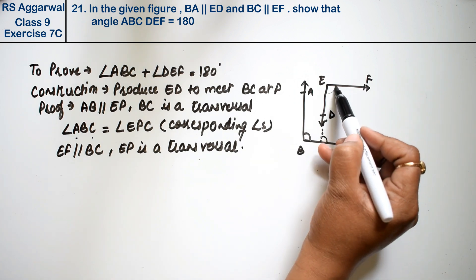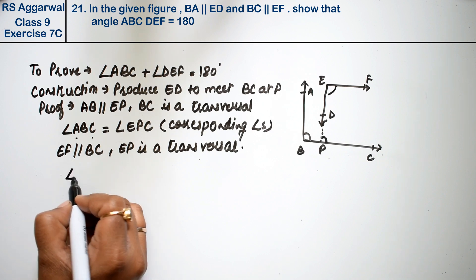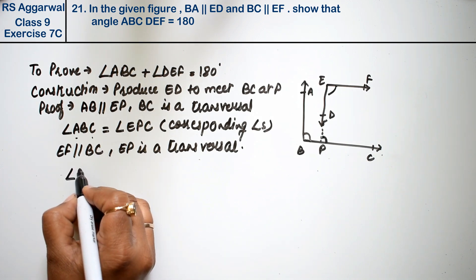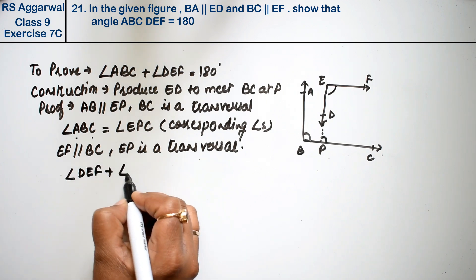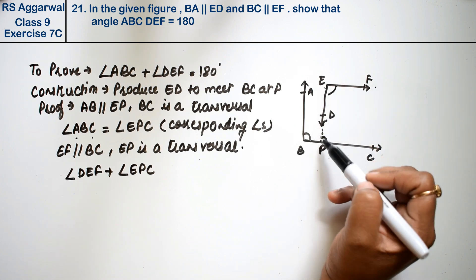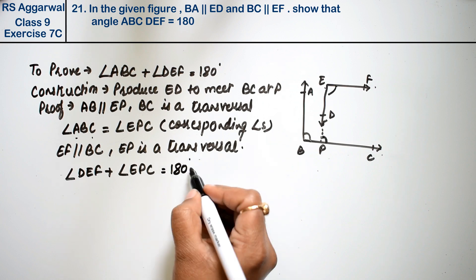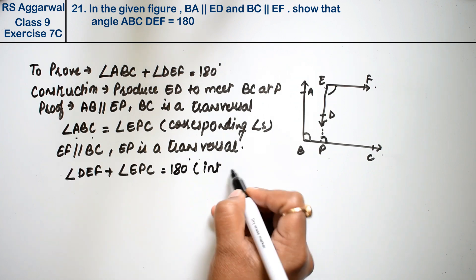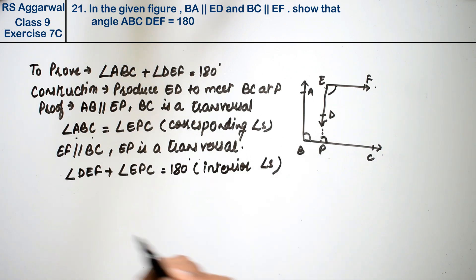So this angle and this angle sum to 180 degrees. Angle DEF plus angle EPC equals 180 degrees. Why? Because these are interior angles.